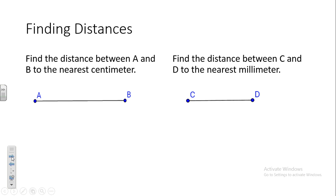Now measure the distance between C and D to the nearest millimeter. A centimeter is a hundredth of a meter; a millimeter is a thousandth. The marks on your ruler show centimeters, and the little tick marks between them are millimeters. Line it up against C and D. Is it exactly 40, or 41, or 42? Everyone is getting 41 millimeters — write down 41 millimeters on that example.